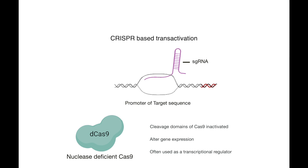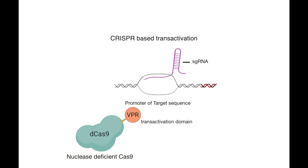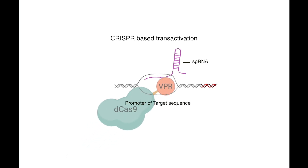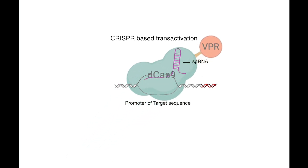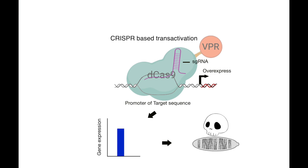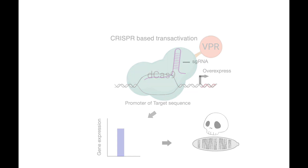Here, we fuse the dCas9 protein to a transactivation domain called VPR. When the dCas9-VPR binds to the single guide RNA that targets an endogenous gene, it would overexpress the endogenous gene, resulting in lethality in wild-type flies.